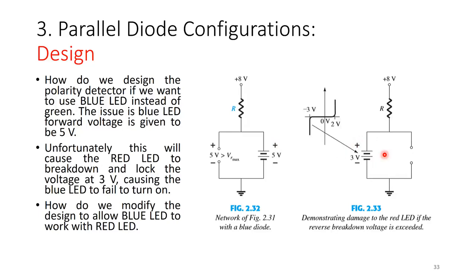Why does the red LED break down at 3 volts? Because that is the component's specification. Once you have that component you must work within its specification. If you can choose a different component, that would be a different scenario.